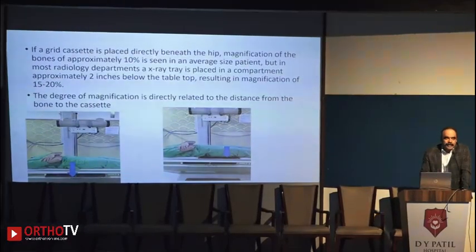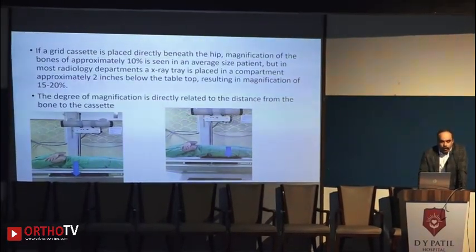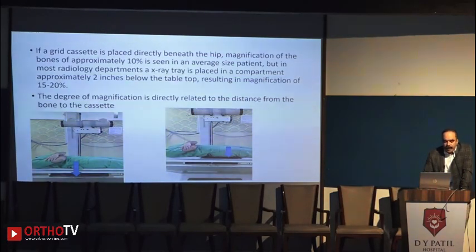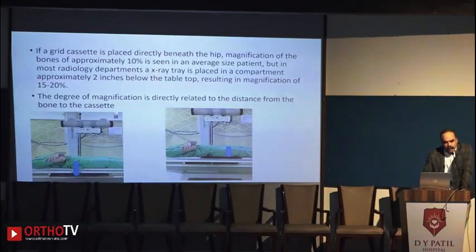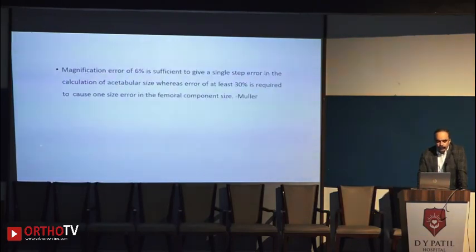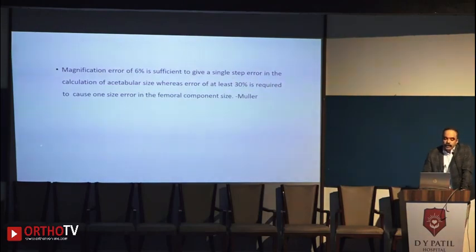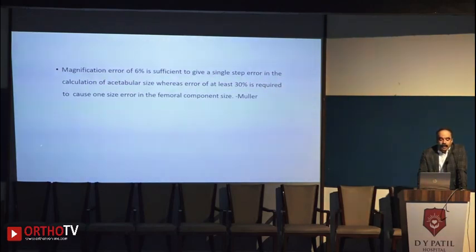There are two ways to take an X-ray: you place the cassette directly under the buttock, or two inches below the buttock on the cassette tray. If placed directly under the buttock, you have 10% magnification, but if two inches away, magnification can increase from 15 to 20%. A magnification error of 6% is sufficient to give a single-step error in acetabular size calculation, whereas at least 30% error is required to cause one size error in the femoral component.